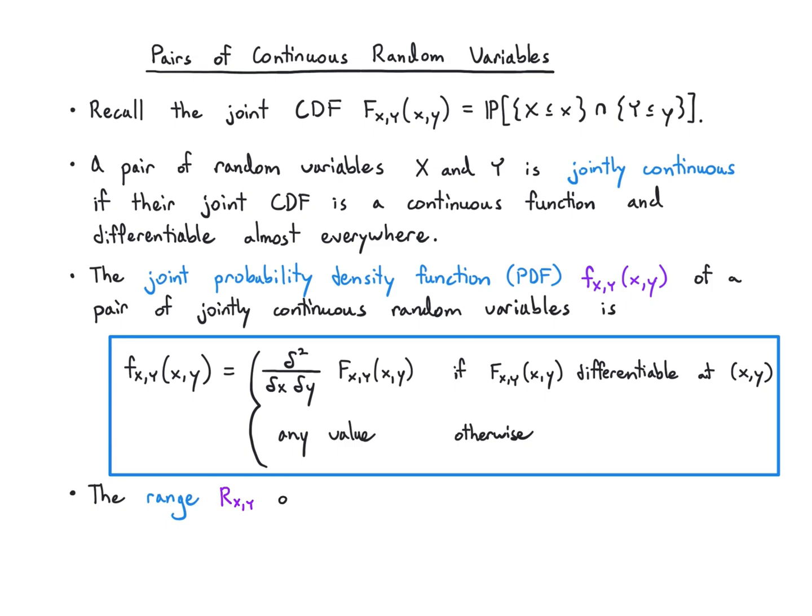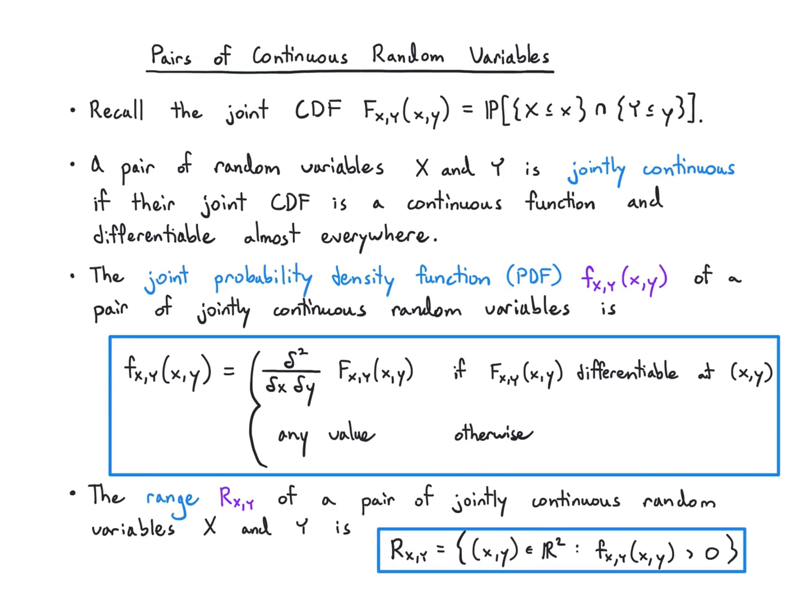The range R_XY of a pair of jointly continuous random variables is just the set of values where the PDF is positive, not zero but positive. These are pretty standard definitions, and the only thing to really note is that you're going to be given the joint PDF directly; you're not going to have to work them out from joint CDFs.